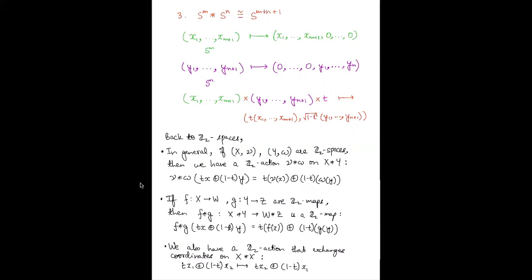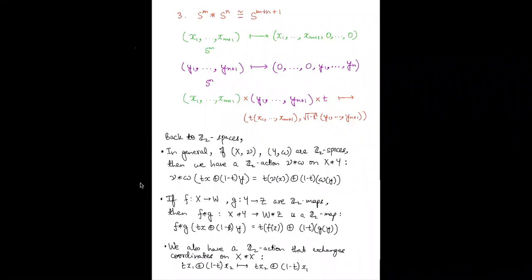Going back to examples of Z2 spaces: if you have two Z2 spaces (X, ν) and (Y, ω), you can give a Z2 action to their join X * Y — called ν * ω — by applying ν to x and ω to y individually. Similarly, if you have Z2 maps from X to W and Y to Z, then you have a Z2 map between X * Y and W * Z, applying f to x and g to y individually. Additionally, similar to the exchange of coordinates for Cartesian products, if you have a Z2 space X, you can equip X * X with a Z2 action that exchanges coordinates.